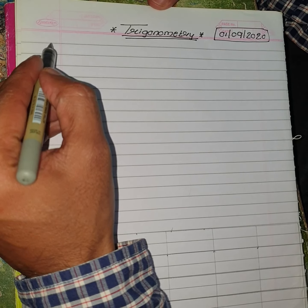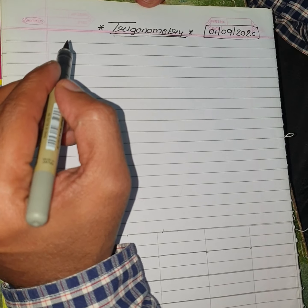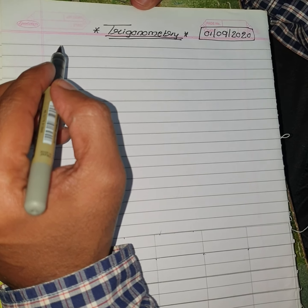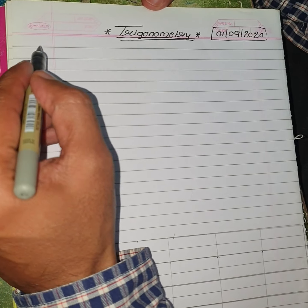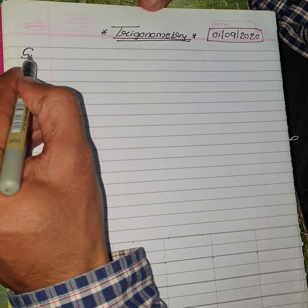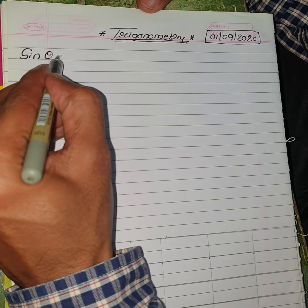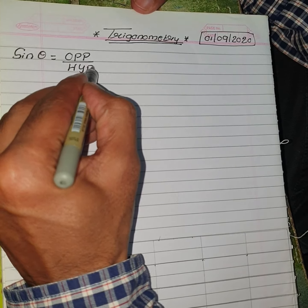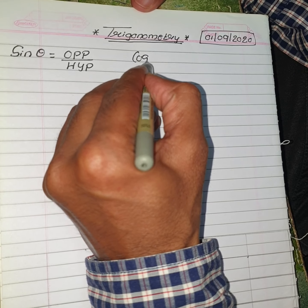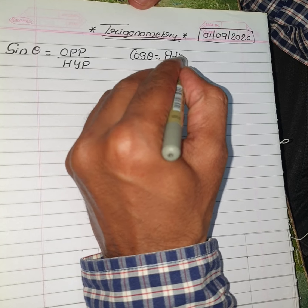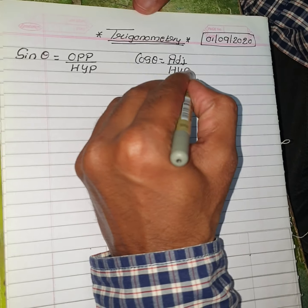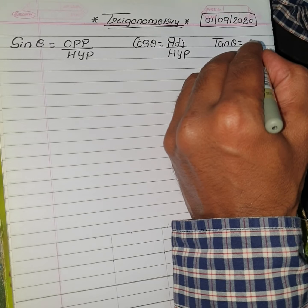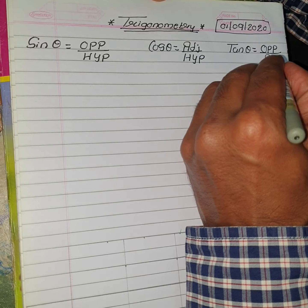In 9th Standard, the first thing we learned about Trigonometry is that trigonometric ratios can be applied if and only if the given triangle is a right angle triangle. The first ratio we saw was Sin Theta is equal to Opposite upon Hypotenuse. Cos Theta is equal to Adjacent upon Hypotenuse. And Tan Theta is equal to Opposite upon Adjacent.